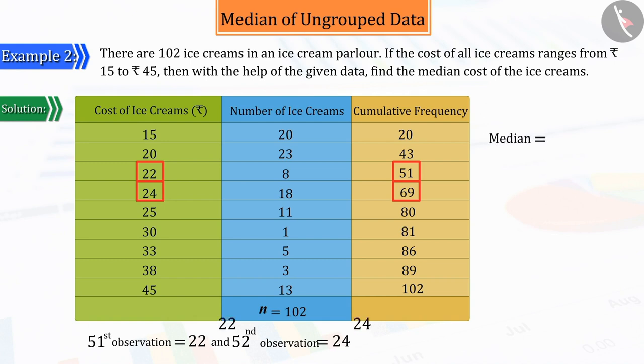Now, if we take the average of 22 and 24, then it gives the median of the prices of ice creams as 23 rupees.